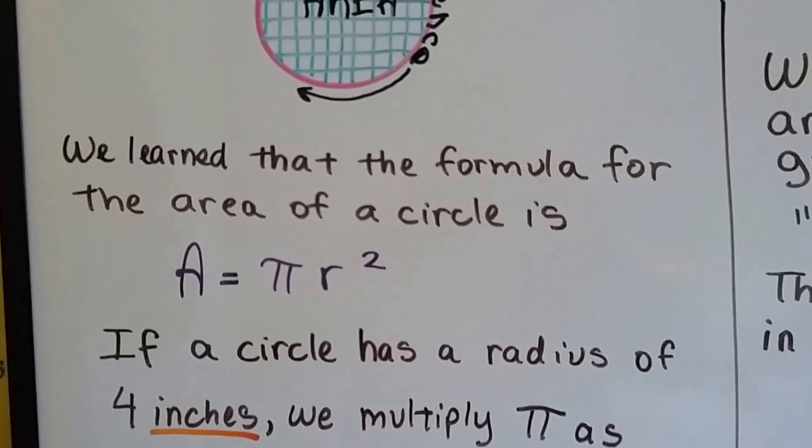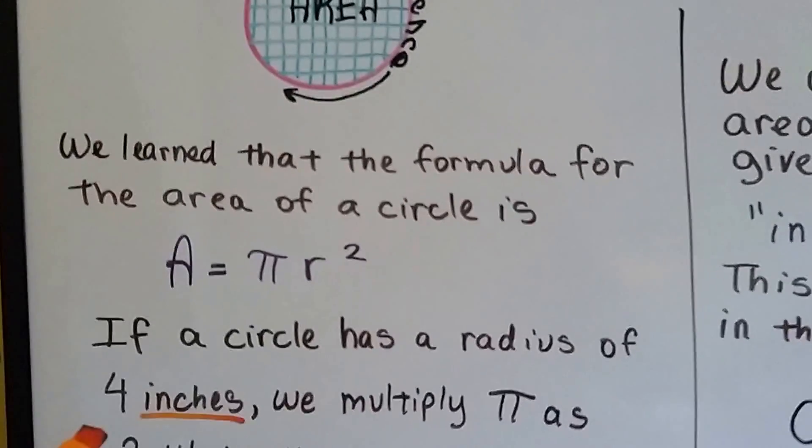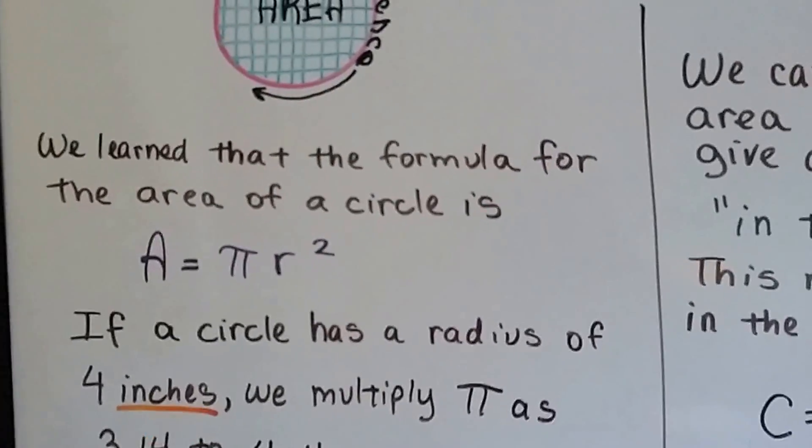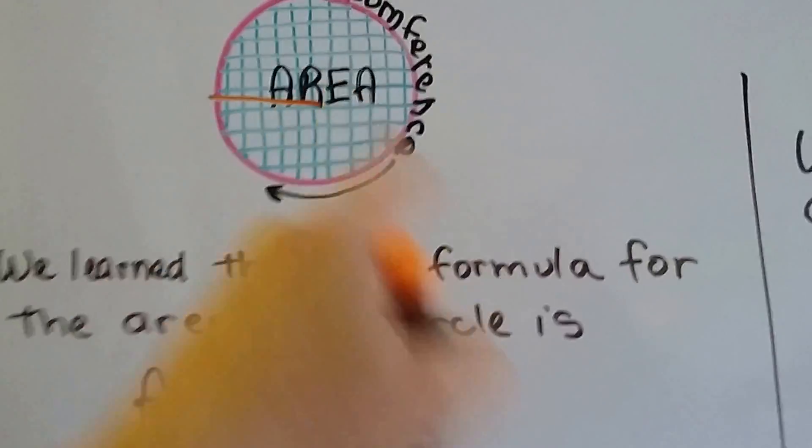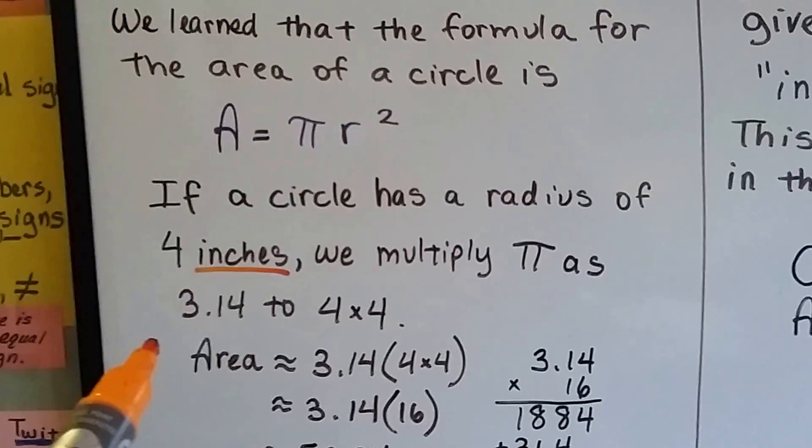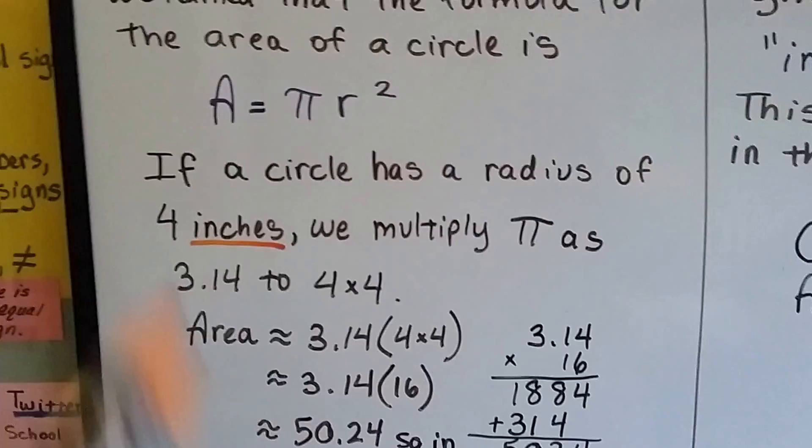What we learned before, that the formula for the area of a circle is A equals pi r squared. If a circle has a radius of 4 inches, if that's 4 inches, we multiply pi as 3.14 to 4 times 4, the radius.